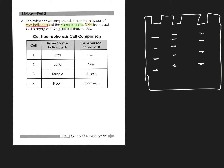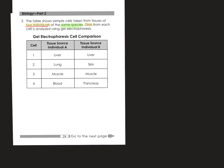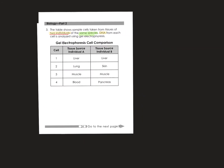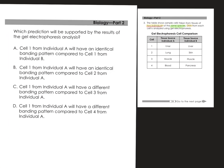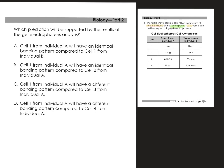The question asks: which prediction would be supported by the results of the gel electrophoresis analysis? If we broke the DNA and analyzed it — comparing two individuals of the same species with the same tissues versus different tissues — these different tissues will have different genes turned on and off. The same tissues from two individuals will have the same genes turned on, but different alleles.